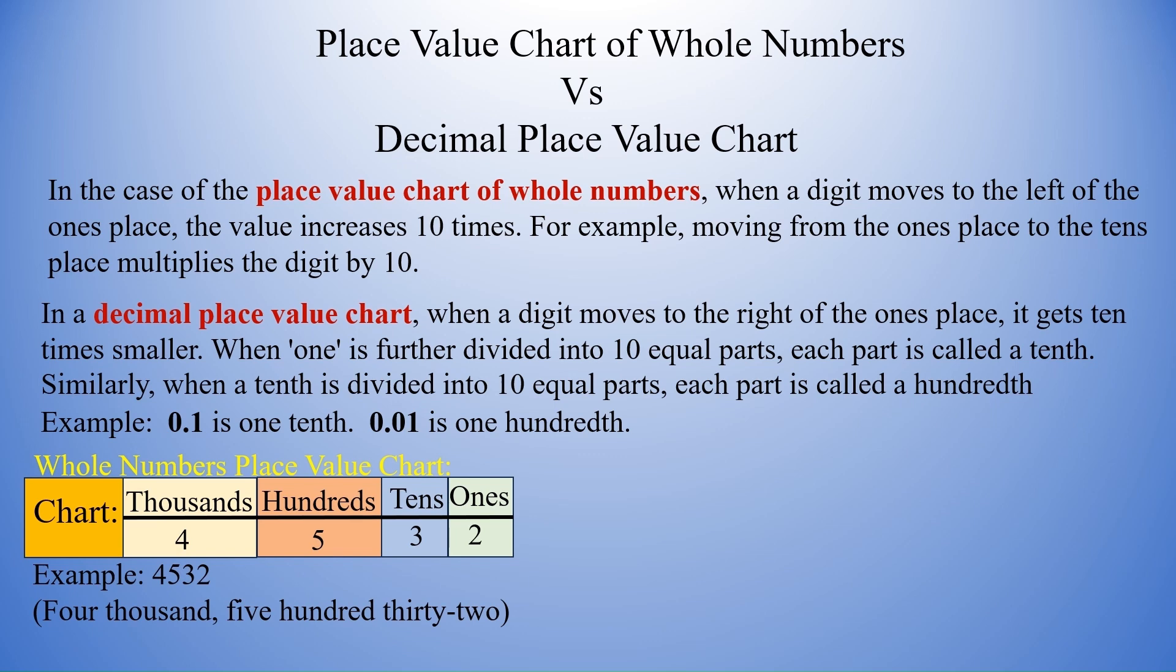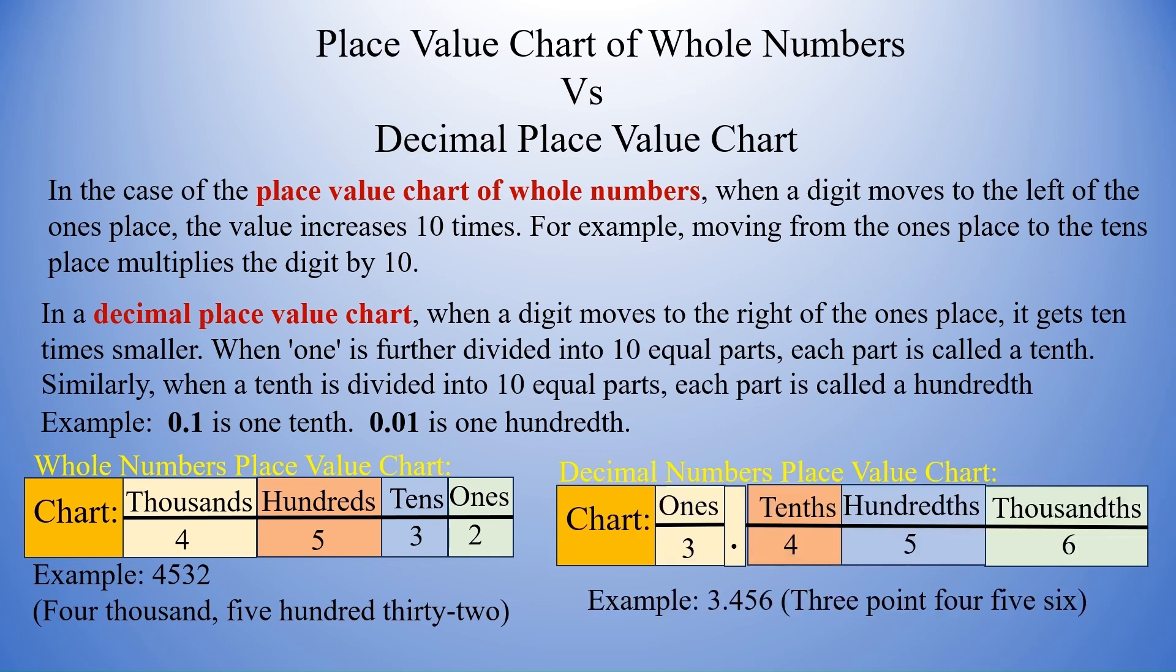Whole numbers place value chart. For example, 4532 can be written like this: two ones, three tens, five hundreds, and four thousands. Decimal numbers place value chart. We will take an example 3.456. So, three ones, four tenths, five hundredths, and six thousandths.